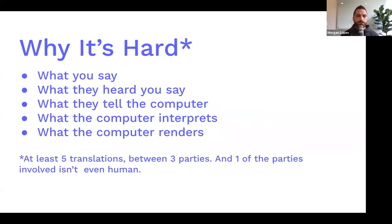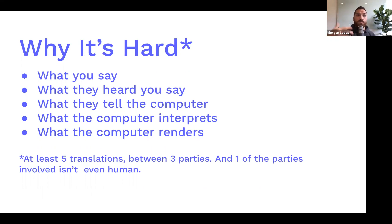Why is this so hard? In a normal conversation two people exchange ideas, but there's added complexity here — more translations. You have what you say, then what they heard, which is filtered through their perspective, then what they have to tell the computer, then what the computer interprets, and finally what the computer does with that information. Each step is a point of potential miscommunication, and one of those parties isn't even human.